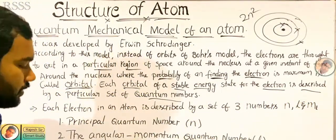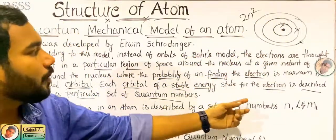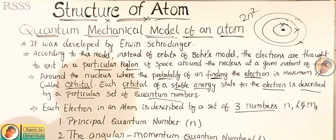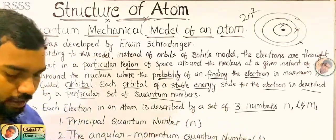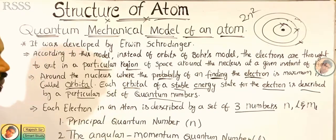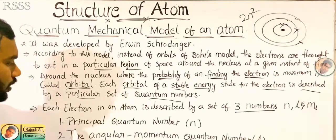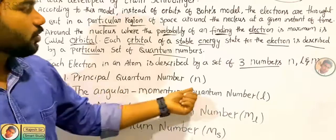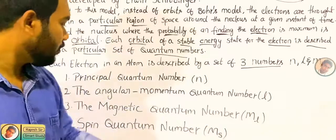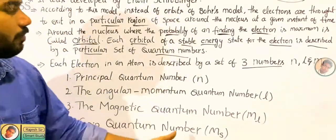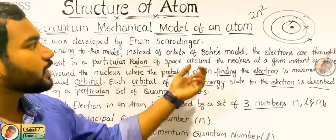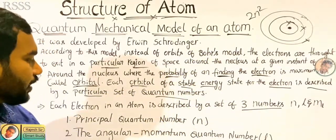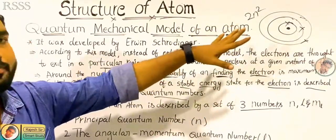Each orbital of a stable energy state for the electrons is described by a particular set of quantum numbers. There are mainly three quantum numbers, but I have given four. In this case, I will explain the spin quantum number also. You have to add: principal quantum number, the angular momentum quantum number, magnetic quantum number, and spin quantum number. Each and every quantum number describes the probability of finding an electron in the orbital regions.